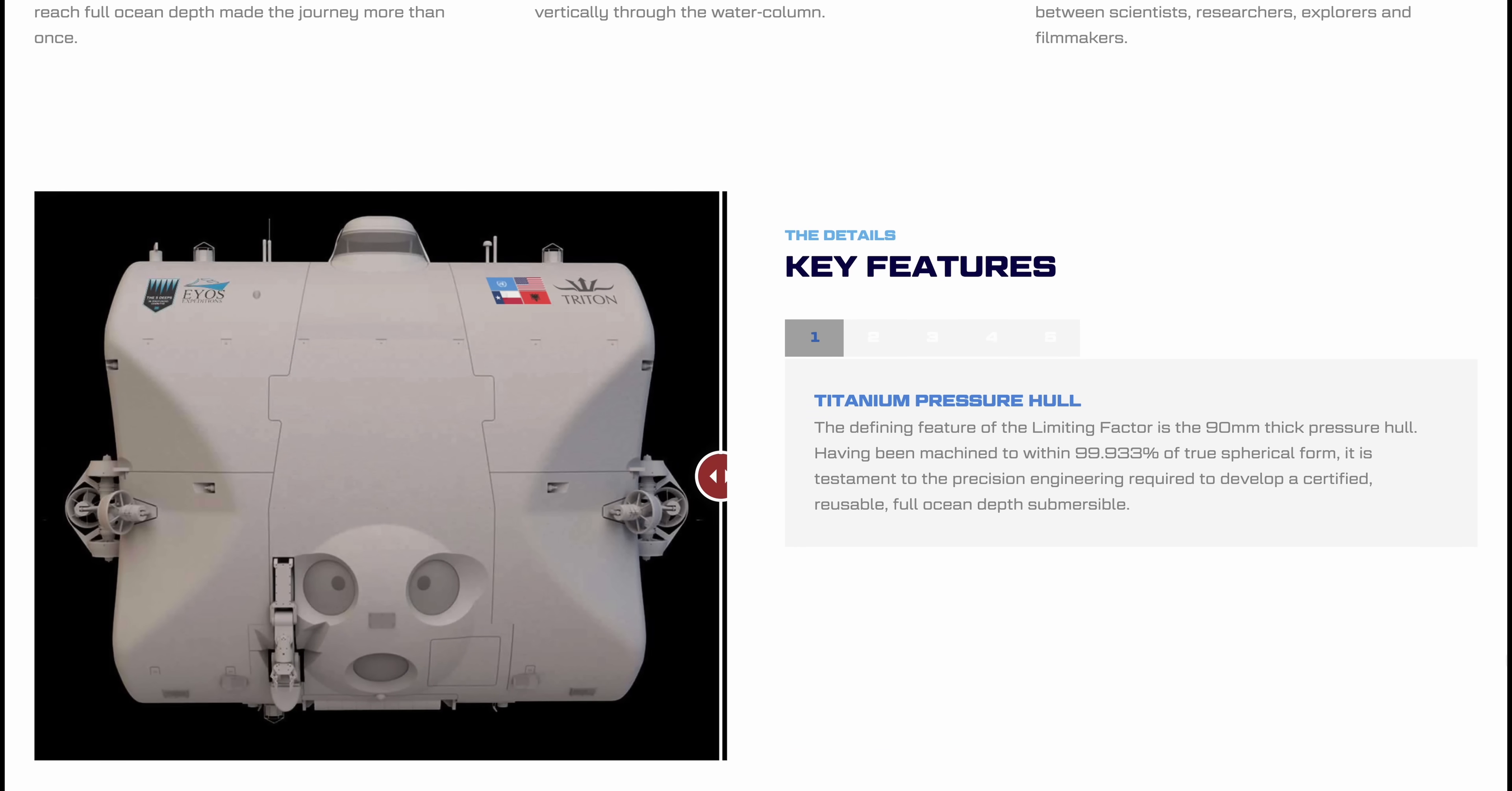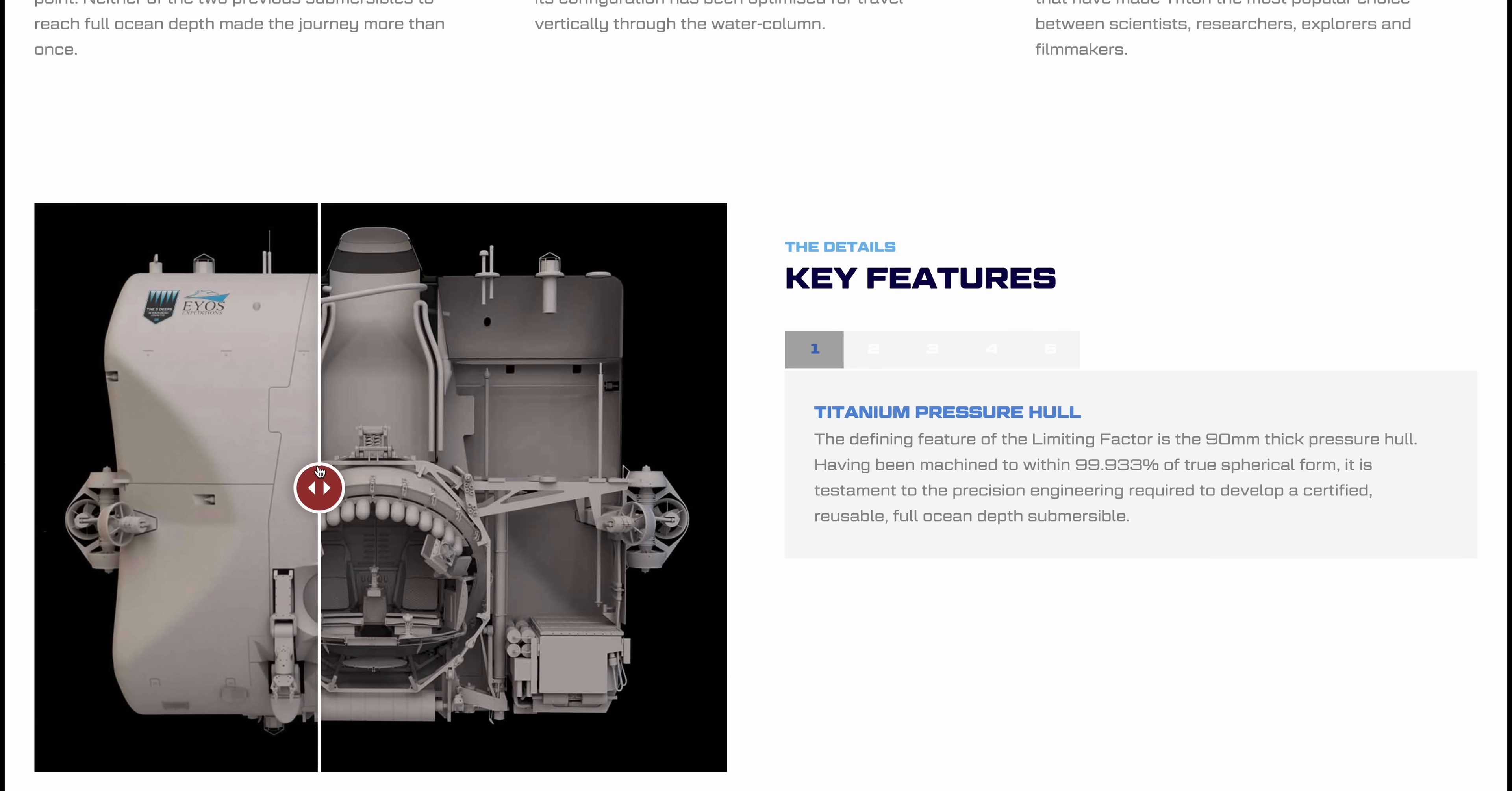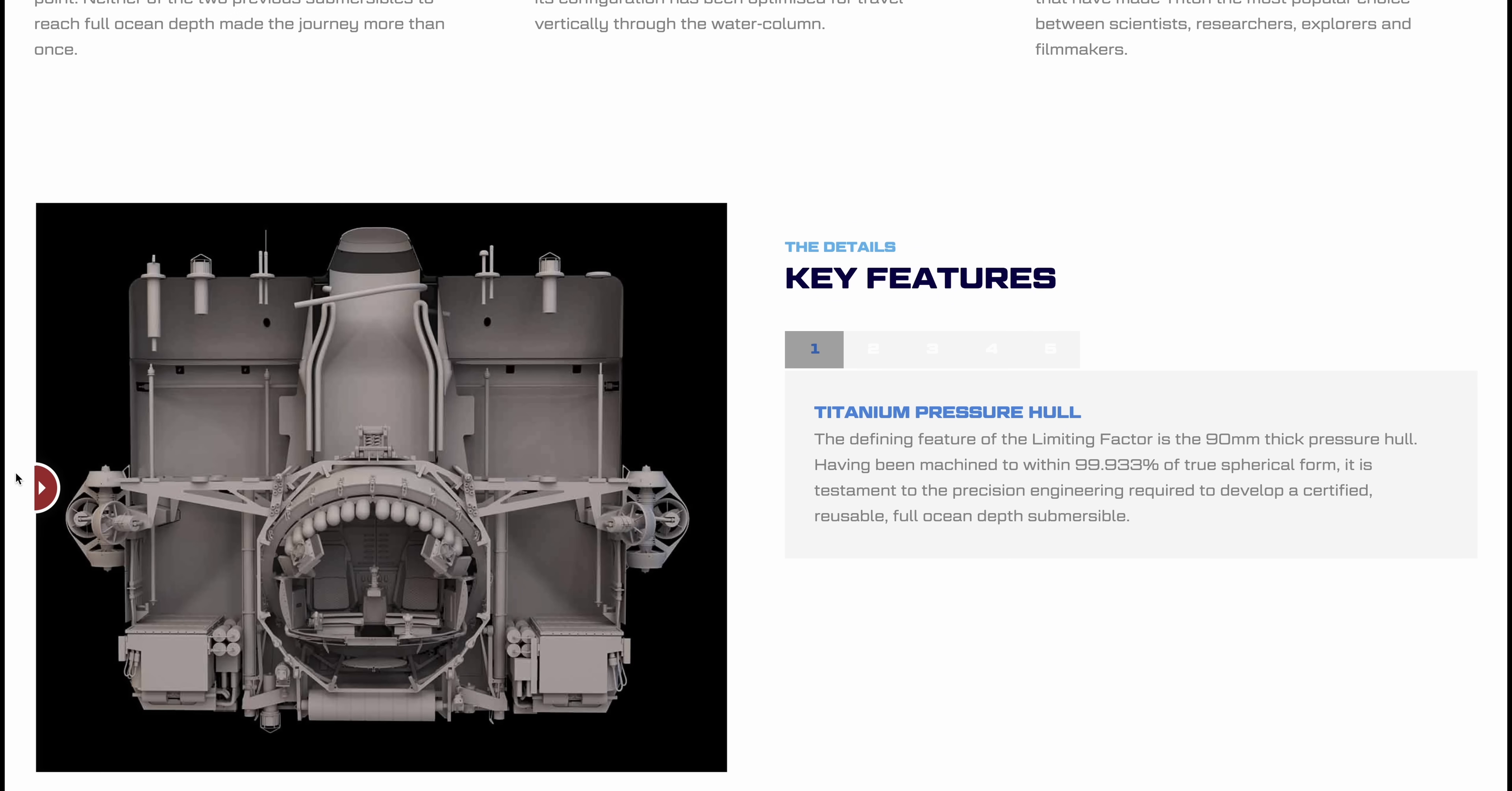And the actual Triton 36,000 divided by 2 that Richard was in was named the DSV limiting factor. And it very safely got him to the bottom of the ocean. The key part, keeping him safe, is the kind of pressure vessel. But the pressure's on the outside. And that was a titanium alloy sphere with walls nine centimeters thick. And they claim that the pressure bit is within 99.933% of sphericalness. That sounds pretty impressive. And it worked.